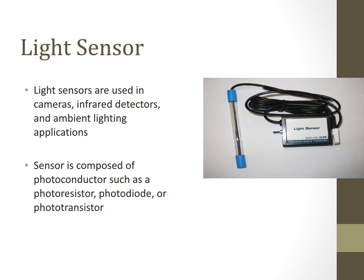Light sensors are used in cameras, infrared detectors, and ambient light sensing. In new-generation phones, the light sensor checks the ambient light and adjusts the camera accordingly to get a better picture. The sensor is composed of photo conductors such as photo resistors, photo diodes, or photo transistors. Light sensors are also used in industries — for example, automatically switching off equipment when no one is around.